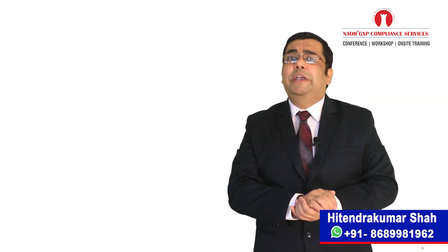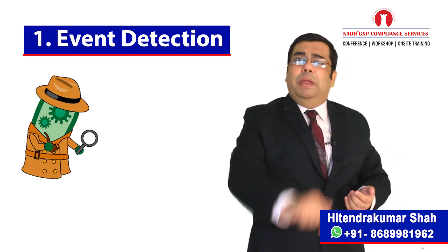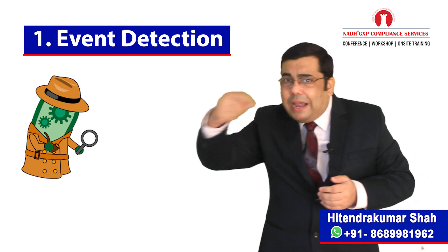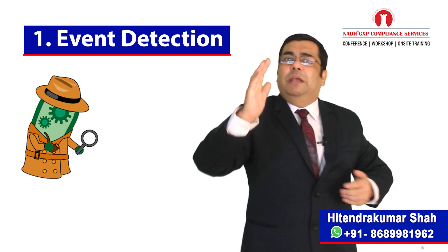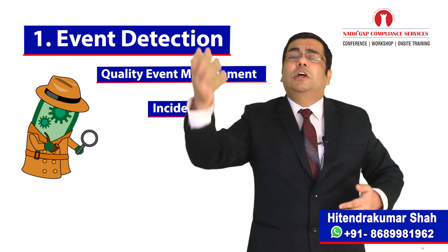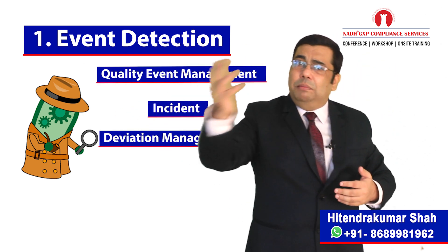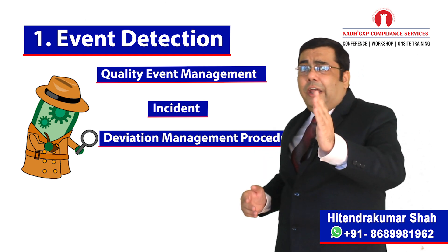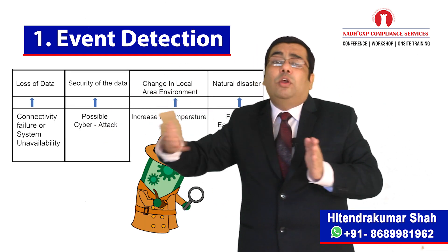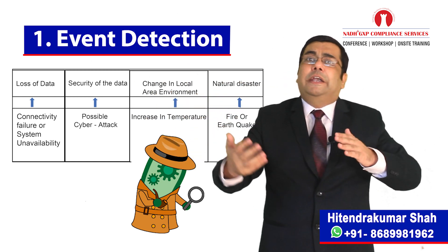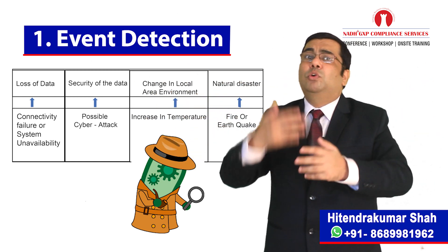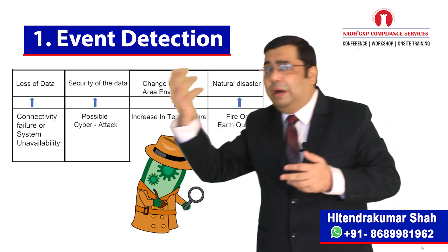The first element is event detection. Under this element, the event should be detected and recorded as per the site procedures — for example, quality event management, incident or deviation management, etc. Under this, we need to evaluate the event cause. The event cause may be related to loss of data, for example due to connectivity failure or system unavailability.